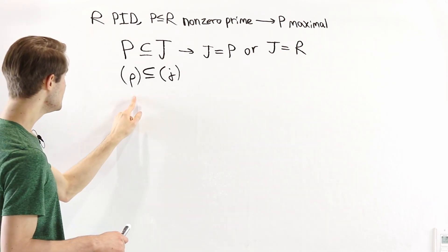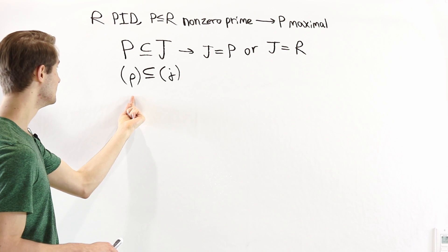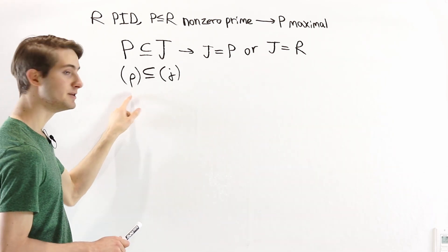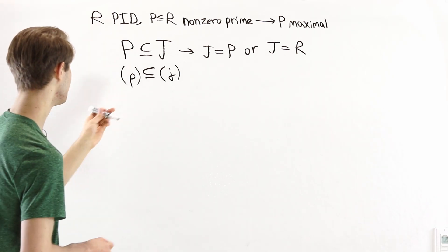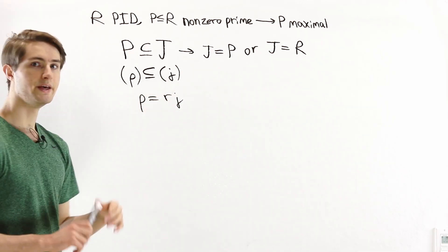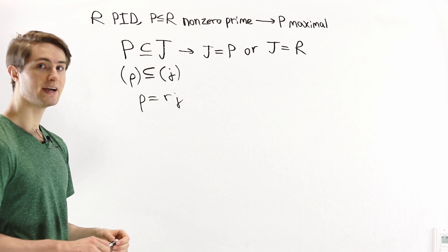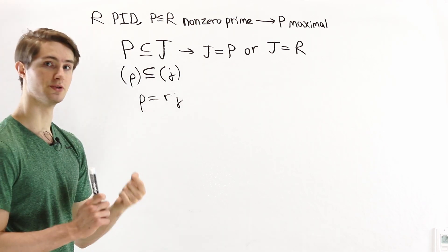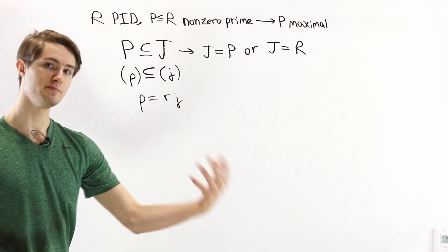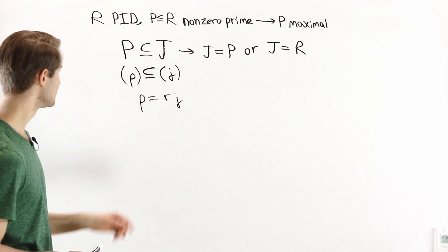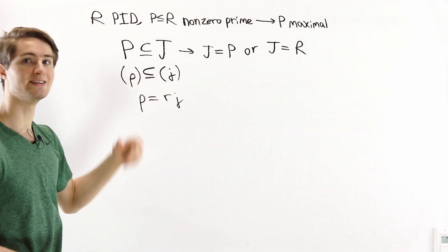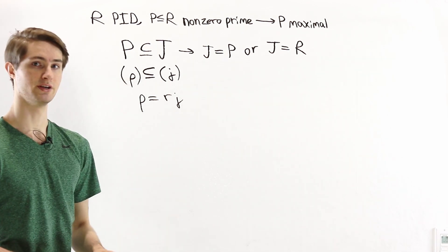To say that P, the prime ideal generated by p, is a subset of J is exactly to say that the element p is a multiple of j. So p is equal to r times j. This is because the ideal generated by p is exactly the set of all multiples of p. So if p is a multiple of j, every multiple of p is also a multiple of j, and every element in the set of multiples of p will also be in the set of multiples of j, giving us the subset relation we want.